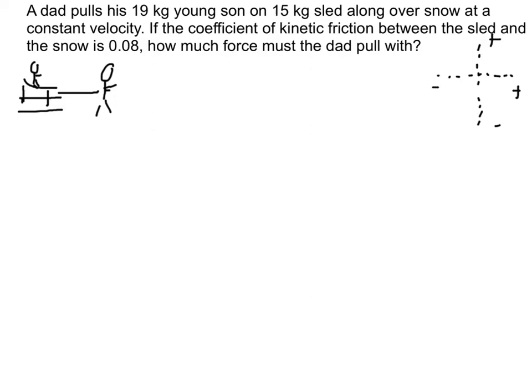All right, I wanted to work another problem with friction here for you. So I have a dad pulling his young son along on a sled, and I give you the mass, the sun, and the sled here. So pulling him along over snow at constant velocity. Constant velocity, key words there, that means acceleration is going to be zero.